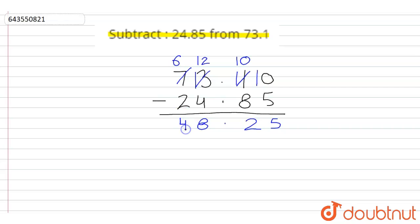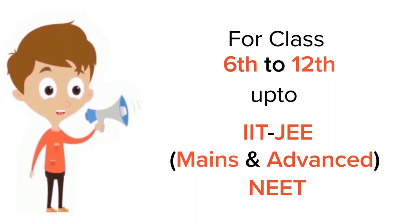12 minus 4 would be 8, 6 minus 2 would be 4. Hence the subtraction answer is 48.25.